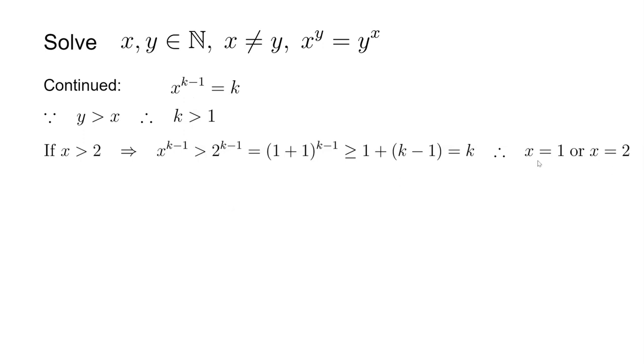Let's take a look at 1 or 2. If x is 1, we plug this back into the original equation and get k equals 1. But we already stated that k is larger than 1. This is a contradiction, so x equals 1 cannot be a solution.